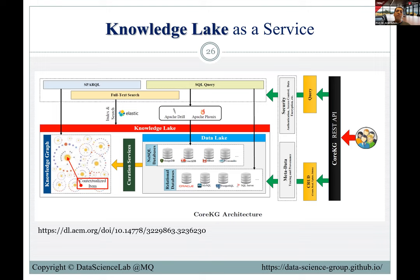This knowledge graph evolves over time and generates a huge graph containing all the knowledge we require. But what is the missing point? In all these curation services, they are automatic — based on extraction, enrichment, etc. We use reinforcement learning for improving quality. But the missing piece is to mimic the knowledge of domain experts and subject matter experts, and then use that knowledge to annotate this graph. If we can do that, it will be a huge opportunity — the next generation of knowledge bases and knowledge graphs. This is what we call Knowledge Base 4.0.